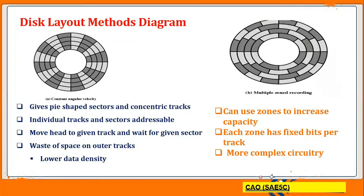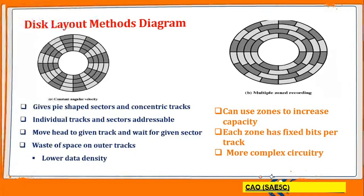The first one is the constant angular velocity, where each sector in each track is divided into equal space. But sometimes it results in wasted space in the outer tracks. That is why they have used MZR, that is Multiple Zone Recording. It increases capacity. Each zone has a fixed number of spare tracks, but it involves more complex circuitry than constant angular velocity.